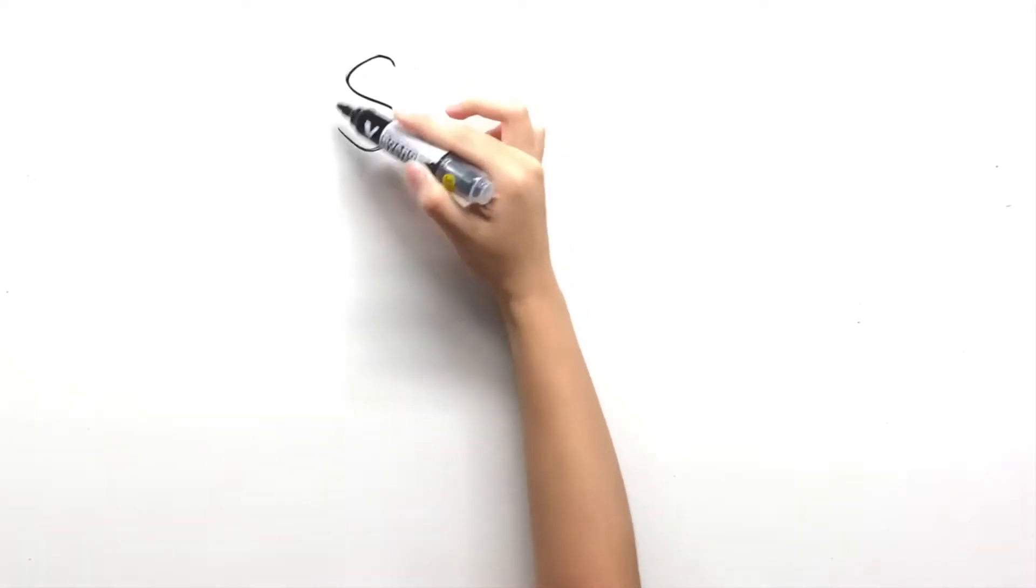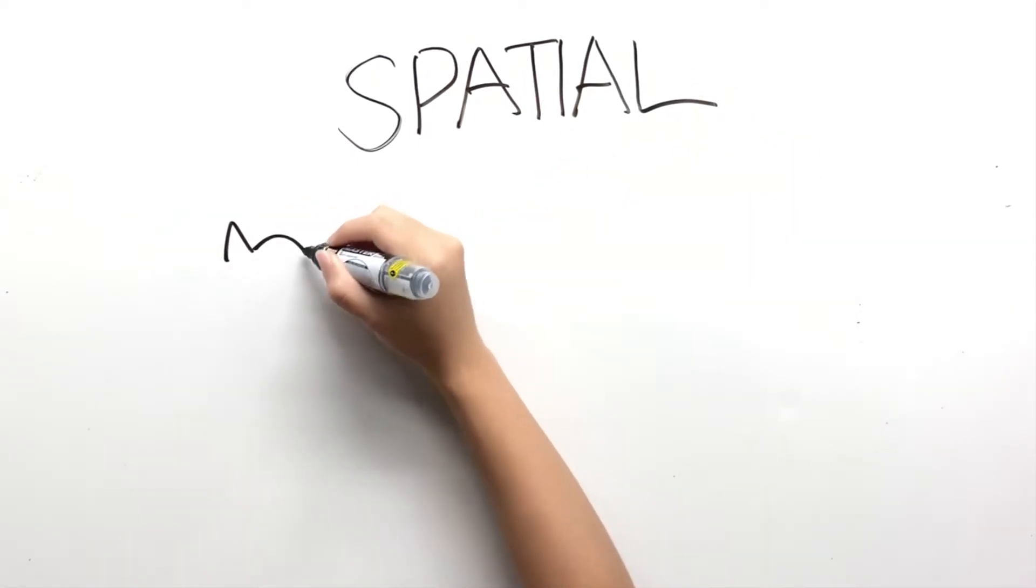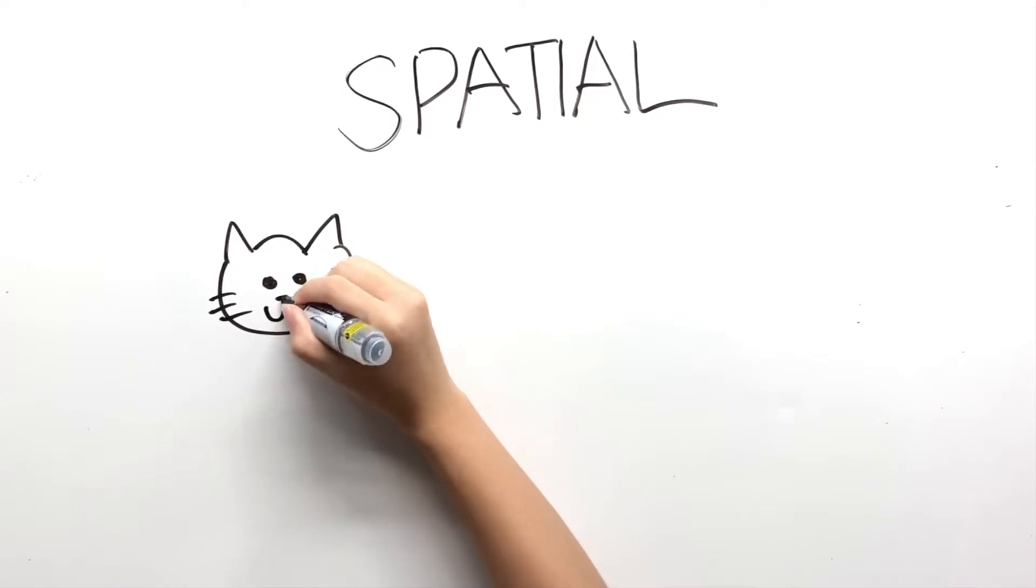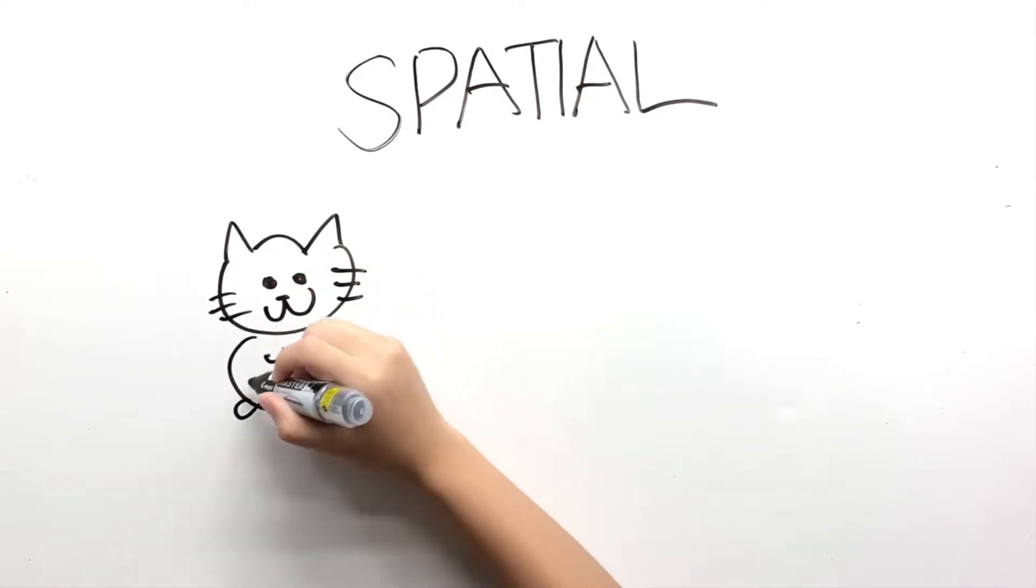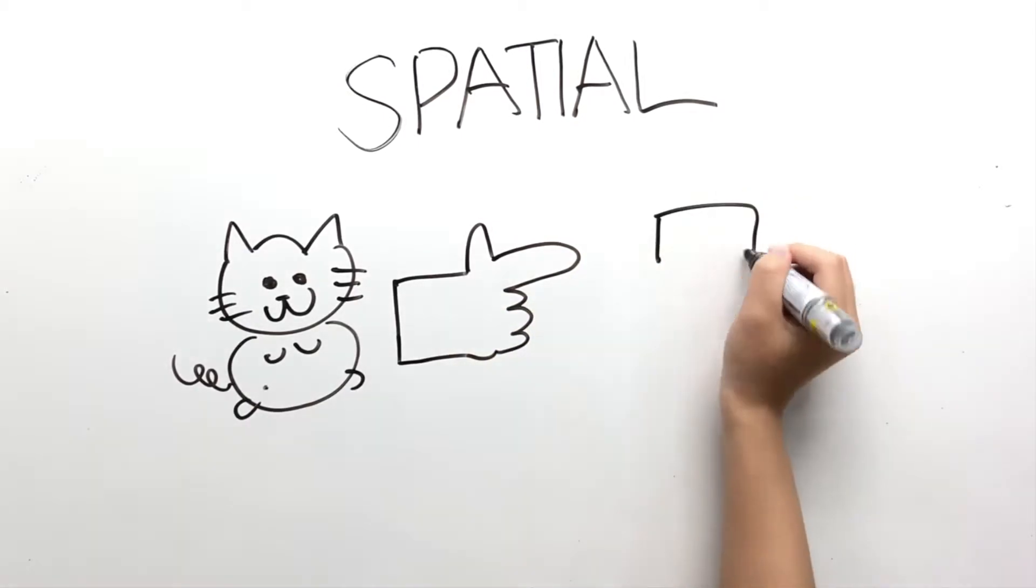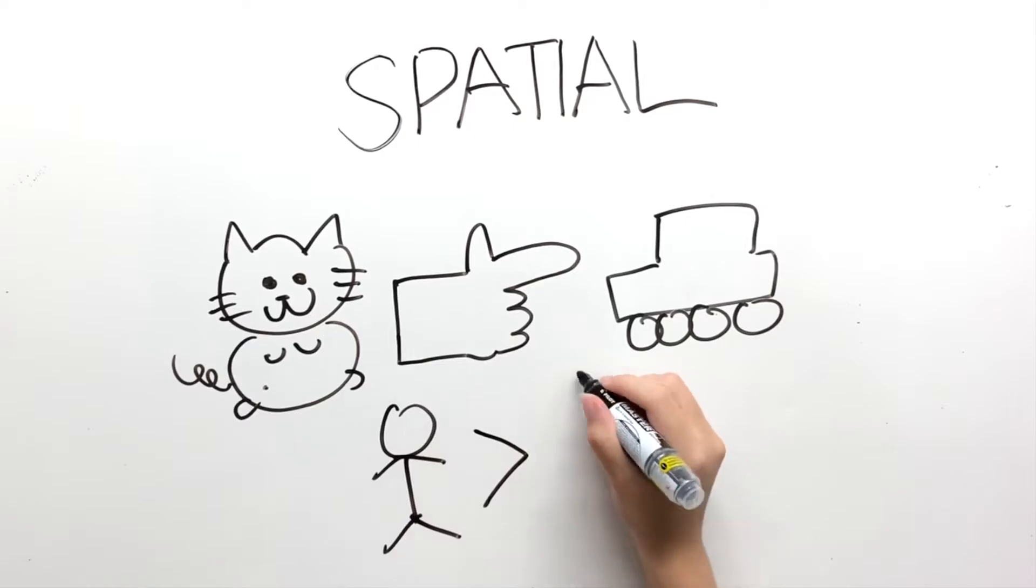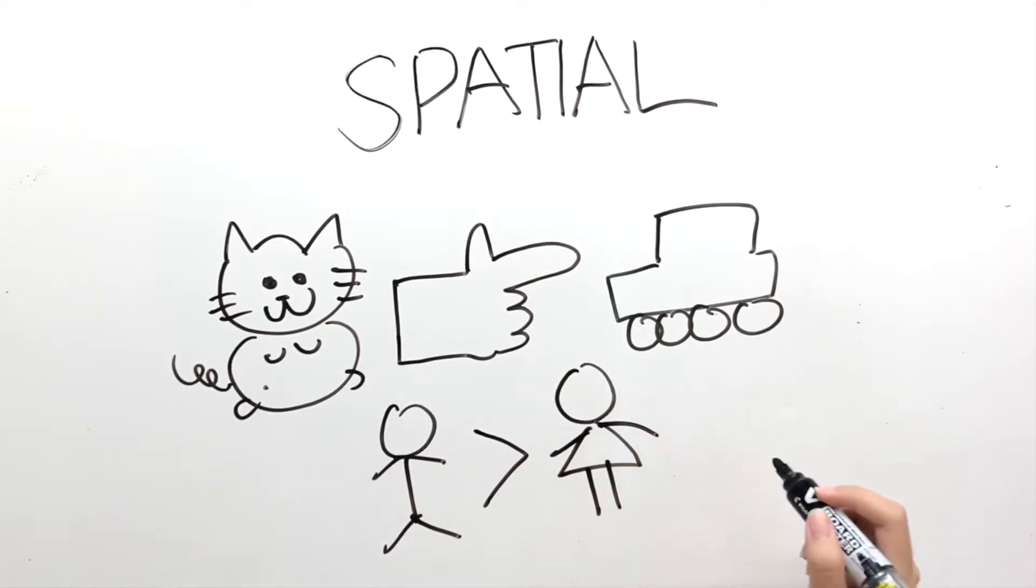For the spatial condition tests, participants were shown an array of objects. In this test, for example, they had to imagine that they were standing where the cat was and point to the car. Moreover, the instructions given emphasize that the test focuses on spatial ability in which men have an advantage over women.